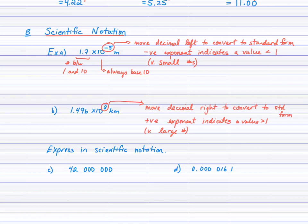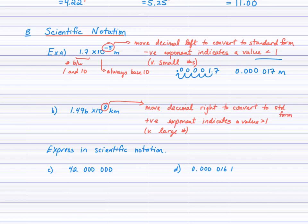The negative exponent tells us to move the decimal left to convert to standard form. So we have 1.7 times 10 to the negative 5. If we move the decimal 5 places to the left — 1, 2, 3, 4, 5 — the new decimal is here and these are zeros in these positions. So we have 0.000017 meters. As you can see, that's a very small number, definitely less than 1. The negative exponent was the clue to that.